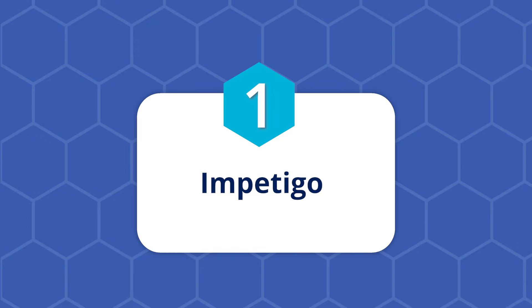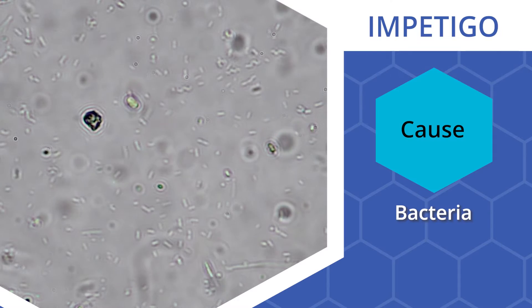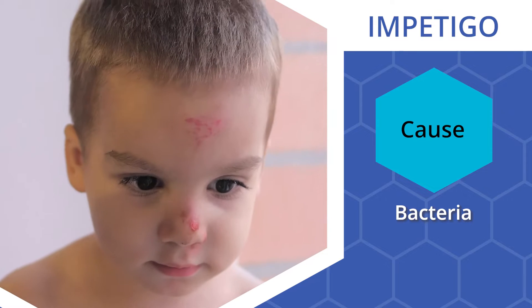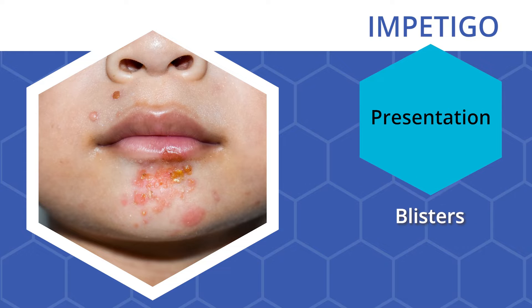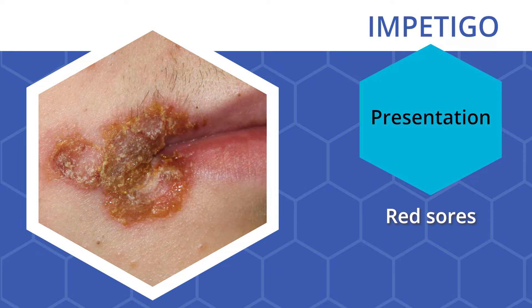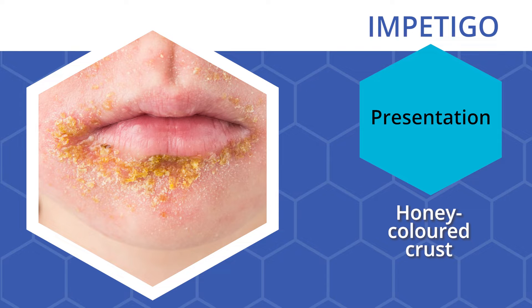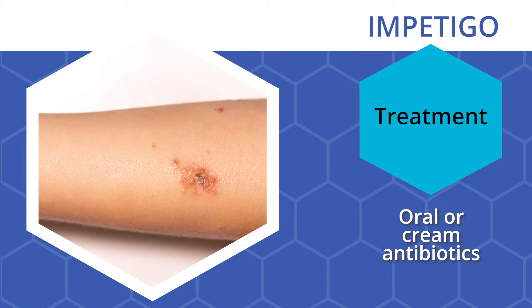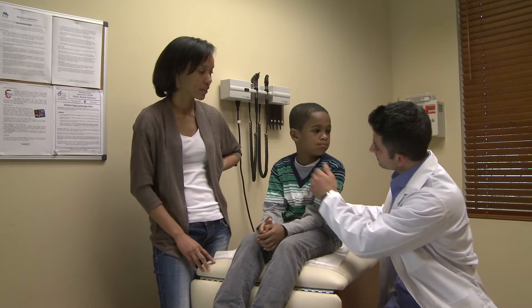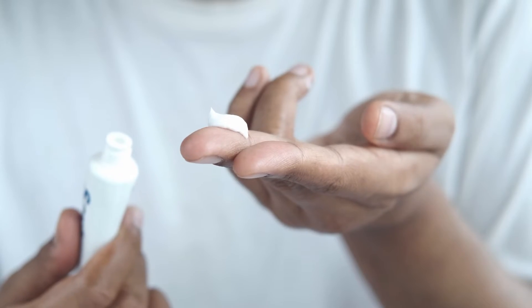1. Impetigo. Impetigo is a bacterial skin infection that spreads very easily. Bacteria enter a small cut in the skin and cause an infection in that location. Impetigo typically appears around the mouth or nose as pus-filled blisters. These blisters will split open forming red sores and as they dry out they will form a honey-colored crust. Because it is very contagious, if your child touches the rash they can spread it to other parts of their body. To treat Impetigo, your child's health care provider will likely prescribe an oral antibiotic or an antibiotic ointment. With treatment, Impetigo usually clears within about five days.